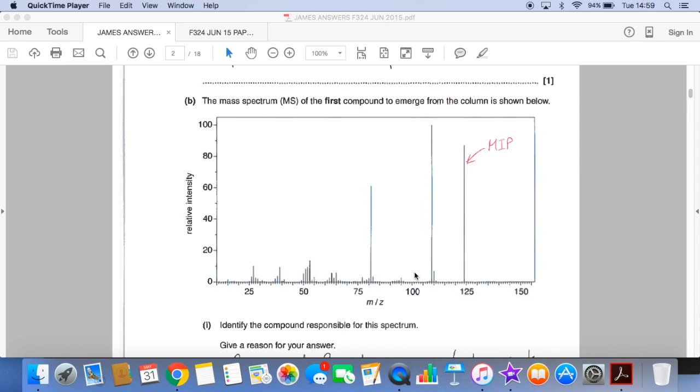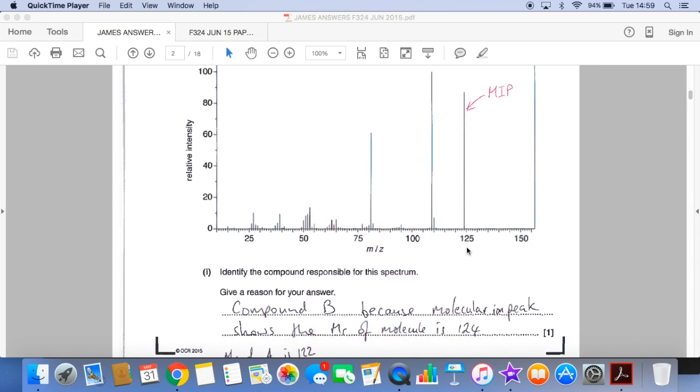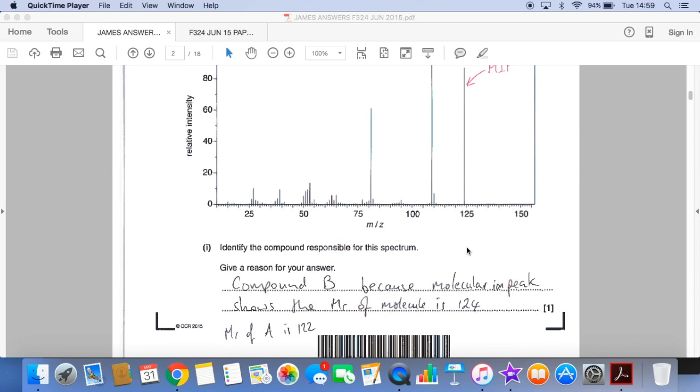Which compound was responsible for the spectrum? Well, this is the key peak in the mass spectrum, it's a molecular ion peak, MIP, and it's coming out with an MR of 124. And then you just work out the MRs of the two compounds. Compound B must give this spectrum because it has an MR of 124, whereas compound A is a little bit lighter at 122.